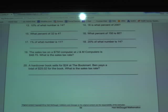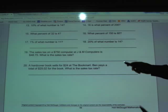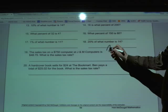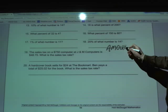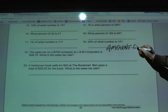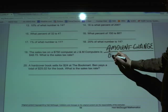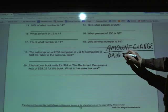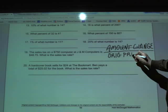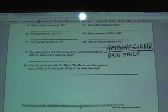If they just give you the amount of tax, they've already figured out the amount of change for you. So you're going to take the amount of change, and to find the sales tax, you're simply going to divide that by the original price of the item.